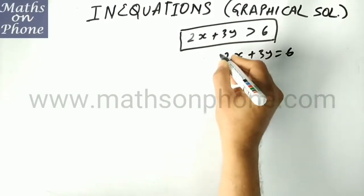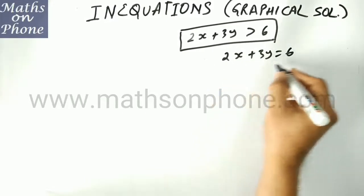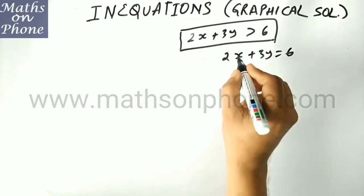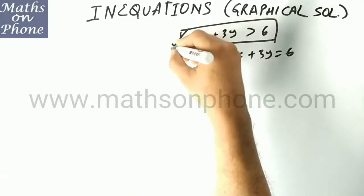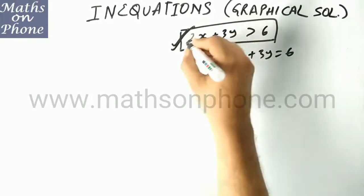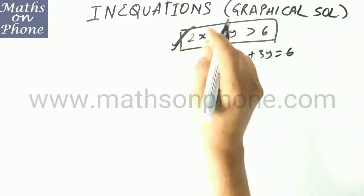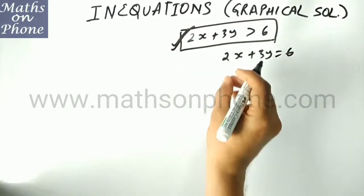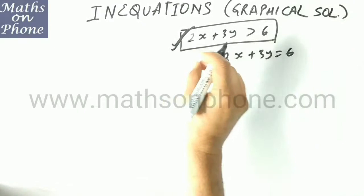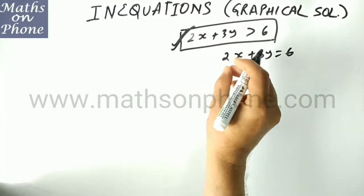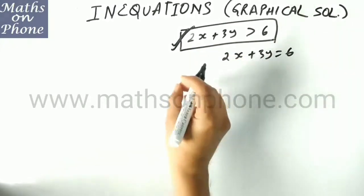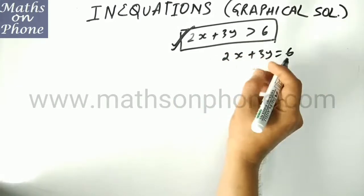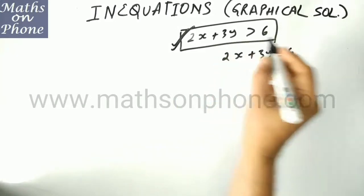A straight line represents a line only, but an inequation will represent an area, a region. So now we will solve two linear inequations graphically. That means we will try to find the common region.